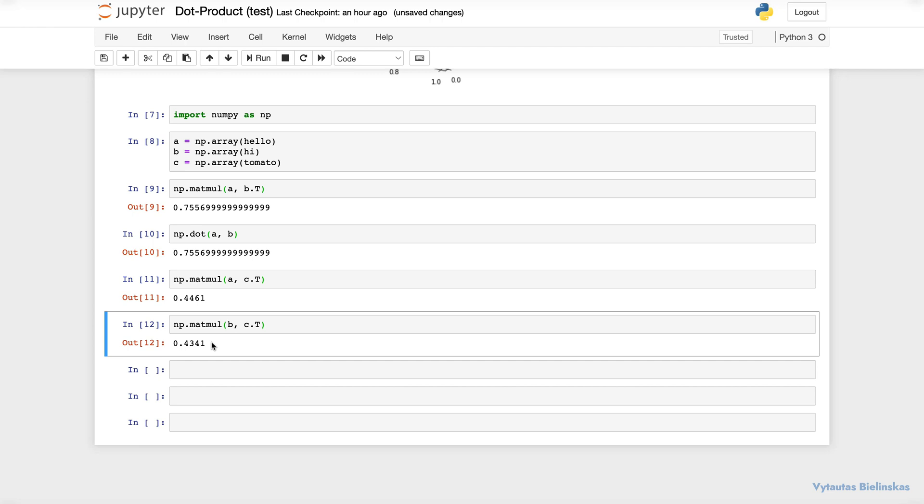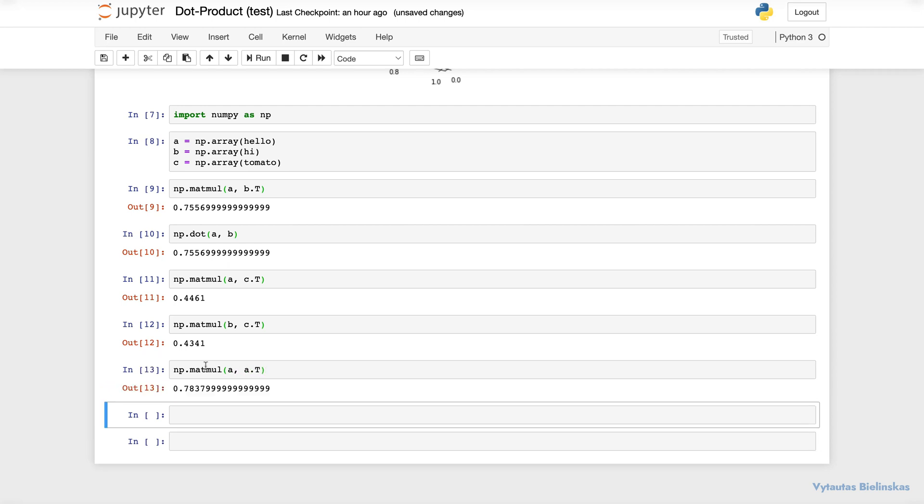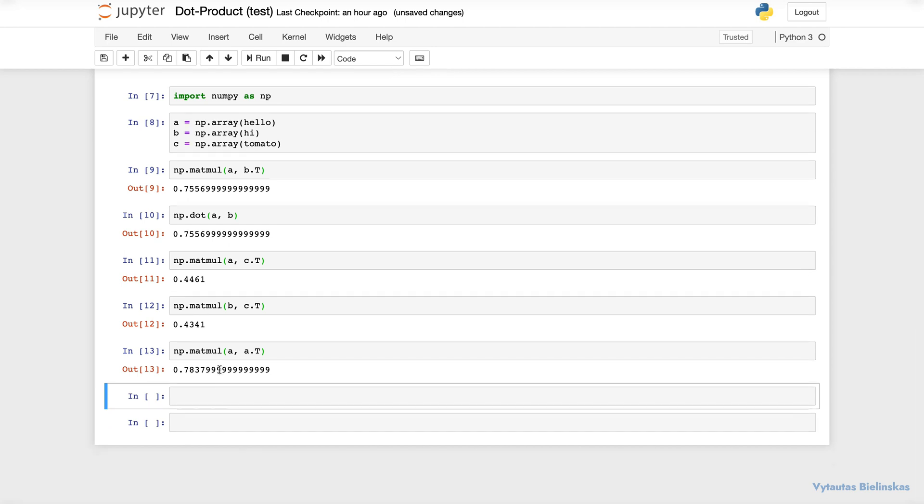In the case where we have a larger range of values, dot product is not that great. In that case we would probably use something like cosine similarity. But dot product is what we would typically use here and it is what we use for attention. Finally if you pass a and a in numpy matmul you can expect 1.